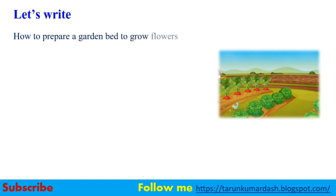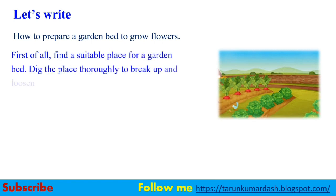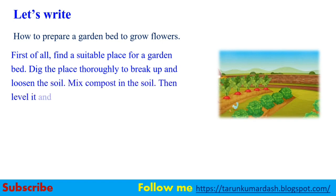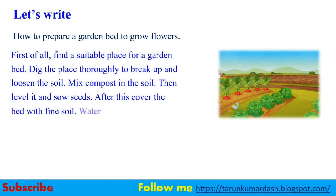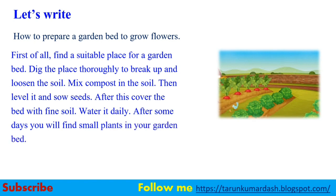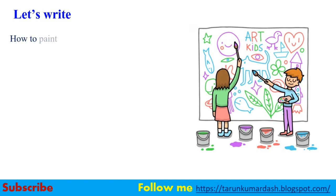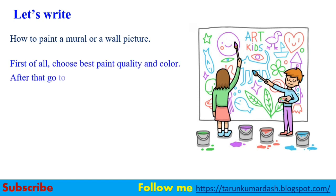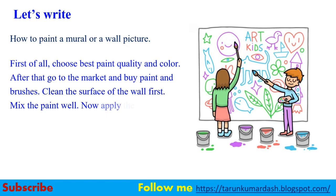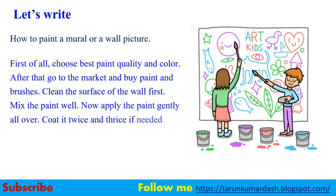How to prepare a garden bed to grow flowers: first, find a suitable place for a garden bed. Dig the place thoroughly to break up and loosen the soil. Mix compost in the soil, then level it and sow seeds. After this, cover the bed with fine soil. Water it daily. After some days you will find small plants in your garden bed. How to paint a mural or wall picture: choose best paint quality and color, go to the market and buy paint and brushes, clean the surface of the wall, mix the paint well, apply the paint gently all over, and coat it twice or thrice if needed. Your wall has become beautiful now.